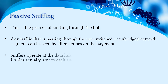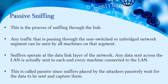Passive sniffing is a process of sniffing through a hub, where the hub is the central connecting device in your network. Any traffic passed through a non-switched or unbridged network segment can be seen by all machines on that segment. Sniffers operate at the data link layer of the network, so any data sent across the LAN is sent to each and every machine connected to it. This is called passive sniffing, since sniffers placed by attackers passively wait for data to be captured.